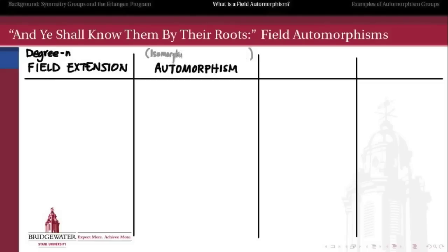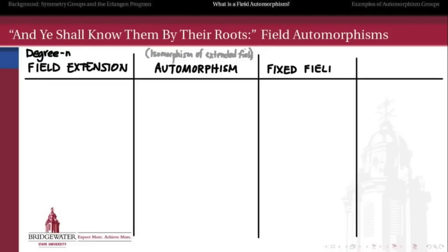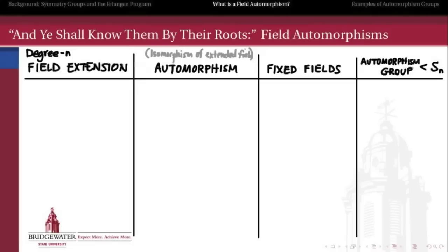We'll have to define what a field automorphism means, but generally speaking, an automorphism can be thought of as an isomorphism of the extended field to itself. Where we had invariants before in our geometric example, we're going to have invariants here as well, but we give them a different name: we call them the fixed fields of each of the automorphisms. And where we had symmetry groups for our polygons, we rebrand them for fields — instead of symmetry groups, we call them automorphism groups, which are isomorphic to subgroups of Sn for a degree n field extension.